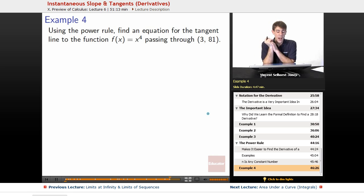So, using that power rule, find an equation for the tangent line to the function f of x equals x to the fourth that passes through 3 comma 81.